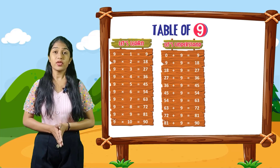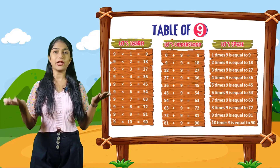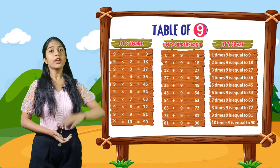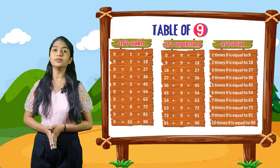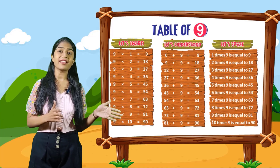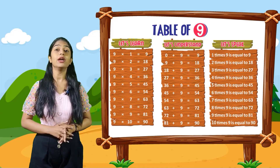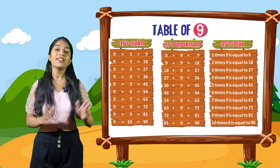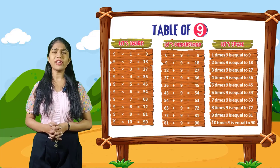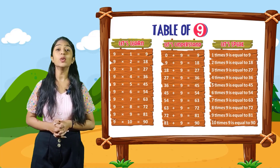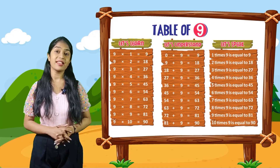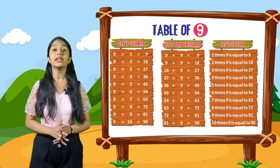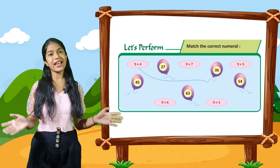So now let's speak. You have to speak out with me. 1 times 9 is equal to 9. 2 times 9 is equal to 18. 3 times 9 is equal to 27. 4 times 9 is equal to 36. 5 times 9 is equal to 45. 6 times 9 is equal to 54. 7 times 9 is equal to 63. 8 times 9 is equal to 72. 9 times 9 is equal to 81. 10 times 9 is equal to 90.